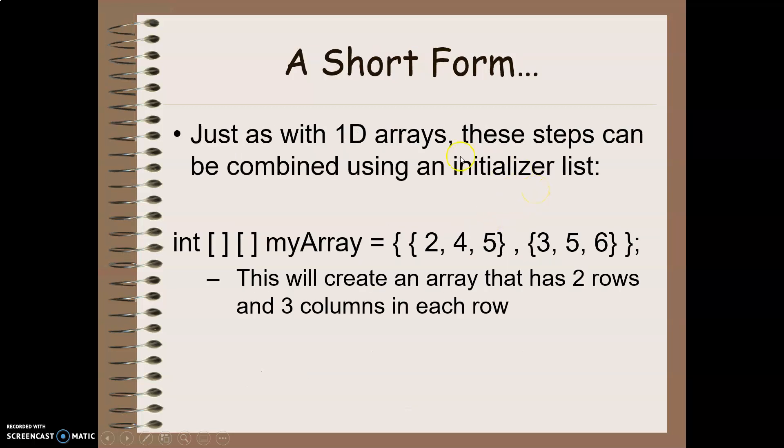I can also use a short form to do this using an initializer list, just like we did with a one-dimensional array. So in this case, I have a curly bracket to show that I have an initializer list. And each element in my array is itself another initializer list. So I have row one separated by a comma, row two. This creates an array that has two rows, and then each row has three elements or three columns in it.